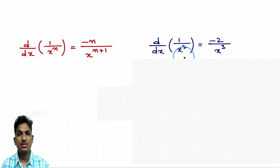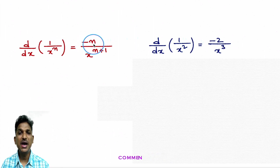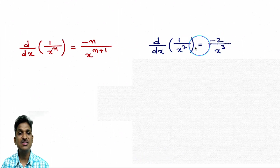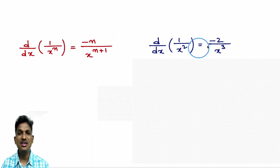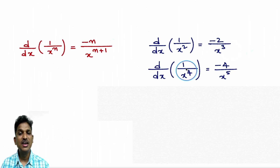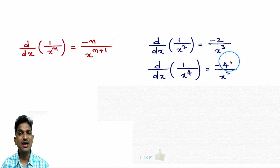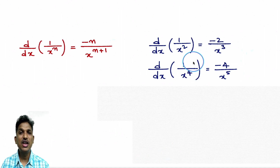d/dx of 1/x square — it looks like 1/x power n form. Applying the formula: minus n (here n is 2) divided by x power n plus 1 (which is 2 plus 1 = 3). So derivative of 1/x square is minus 2 divided by x cube. Similarly, derivative of 1/x power 4: minus 4 divided by x power 5.